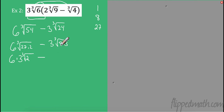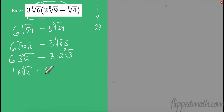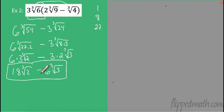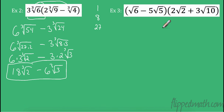We're left with 18 cube root of 2 minus 6 cube root of 3. We cannot combine these because they are not like cube roots. If this were 18 cube root of 3, then I could combine them, but they're not. So that's our answer for the single distribution.